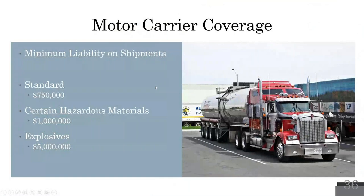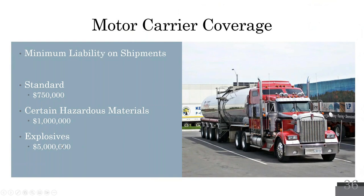Motor carrier coverage: each state has minimum liability limits. For trucking/moving companies, the minimums are higher — a moving company must carry a minimum of $750,000 in liability. If transporting explosives, the minimum is $5 million. These are just minimums; you can always buy more. The exam may ask: 'What's the minimum liability a moving company must carry per the Motor Carrier Act?' — answer: $750,000. For explosives transport: $5 million.